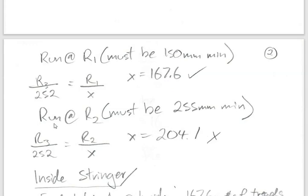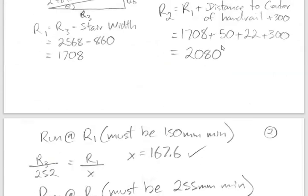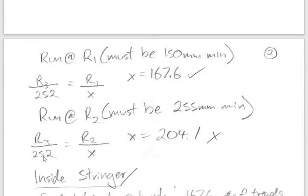We do the same for the run at R2, which must meet 255mm code. Using R3 = 2568, arc = 252, and R2 = 2080: (252 × 2080) ÷ 2568 = 204.1mm. This does not meet code, so this set of stairs would not meet code requirements. We'll continue with the math for the sake of completing the exercise.